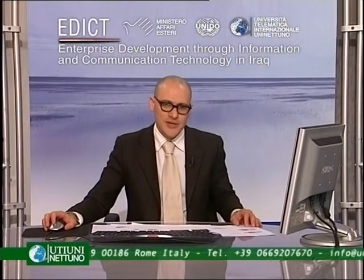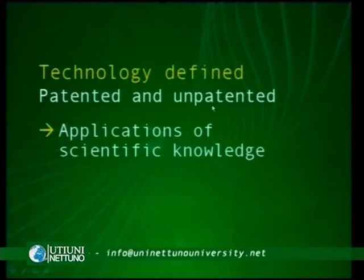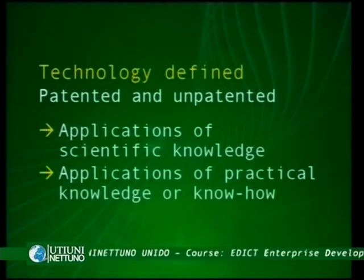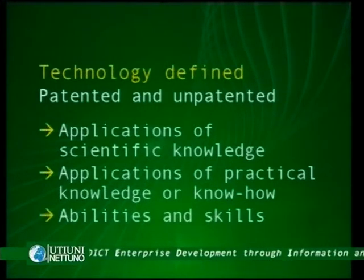Starting from this general definition, we might deal with different possible classifications of technology. Technology could be defined as patented or unpatented, considering the fact that the body of knowledge embodied in specific entities could be defended by a patent or could be free and accessible by other actors. It's about the application of scientific knowledge, practical knowledge or know-how, and about abilities and skills.